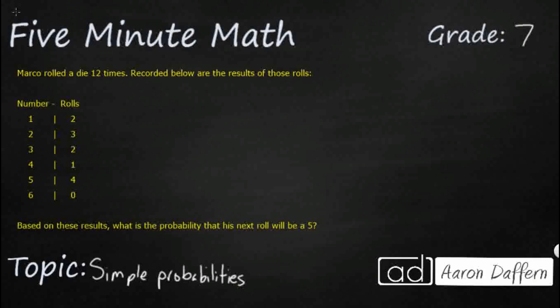We have a pretty basic problem here. Marco is rolling a die 12 times, and recorded below are the results. A die has 6 faces, 1 through 6, and these are the rolls that he got. This is a simple probability simply because there's only one thing that he's doing at a time — he is rolling one die. He's not rolling two and trying to find two different answers. That would be a compound probability.